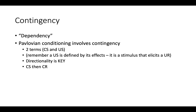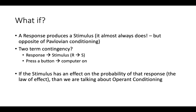What we know about Pavlovian conditioning is that there is a dependency — or what we call a contingency — between two important events: the CS and the U.S. The CS has to be informative of the U.S., telling the organism about the incoming U.S. and providing information about what's going to happen. The U.S. is defined by its effects — it is a stimulus that elicits a UR. The directionality is key: you have a stimulus, then a response. But what if the opposite happens? What if a response produces some stimulus?